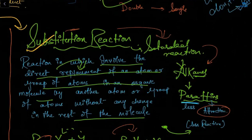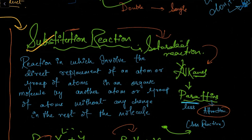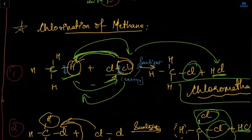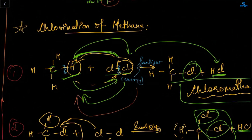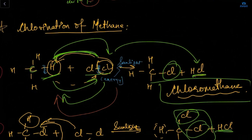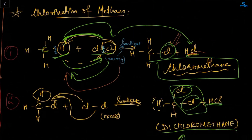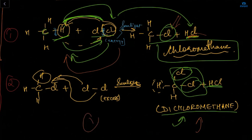Substitution reaction: the reaction involving the direct replacement of an atom or group of atoms in an organic molecule by another atom. Y is substituted in the place of X. In the chlorination of methane, chlorine comes into the place of hydrogen and hydrogen combines with chlorine — this is chloromethane. If there are two chlorines we write dichloromethane, using the prefix 'di' in chemistry for two.